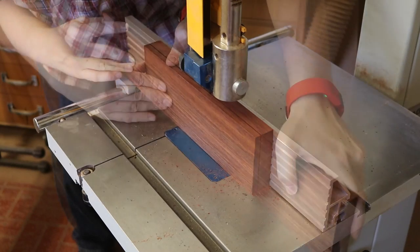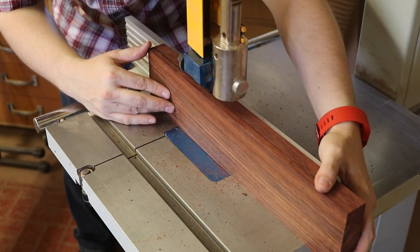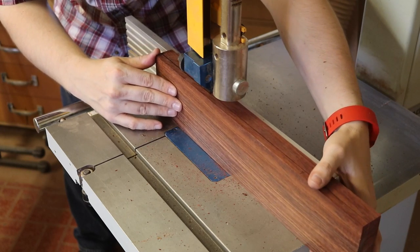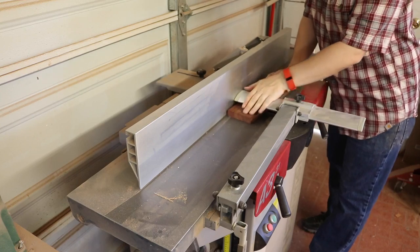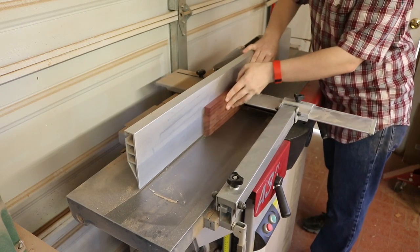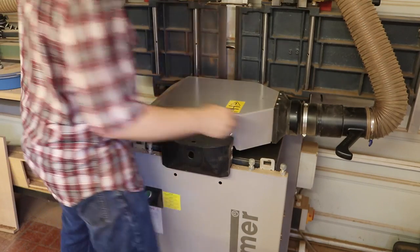After that, I then re-sawed it just a little bit thicker than the final dimensions I want for the depth of my butterfly keys. And then in the jointer, I flattened one face and got one edge nice and square. And then with my jointer and planer mode, I make sure that both surfaces are co-planar to each other.